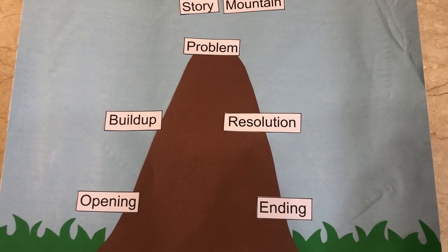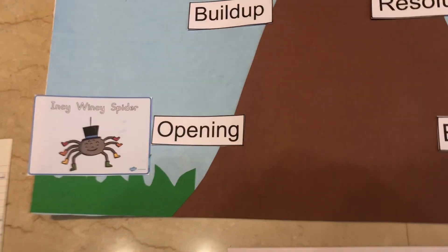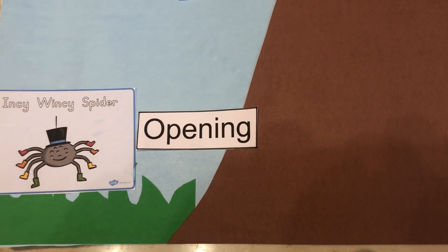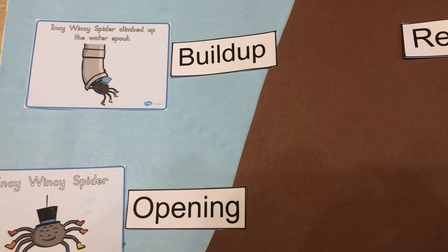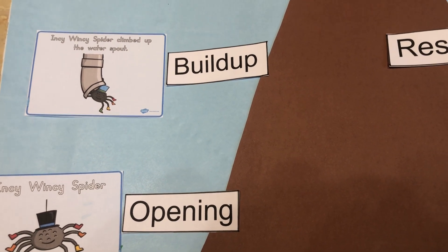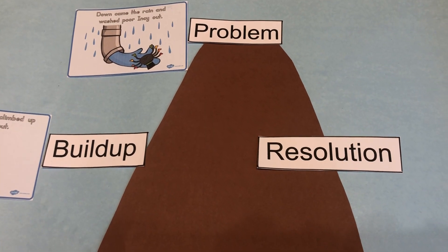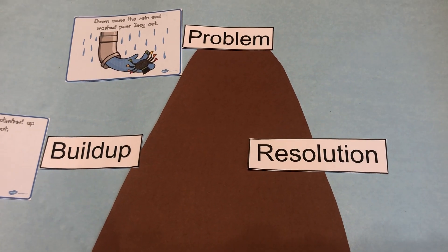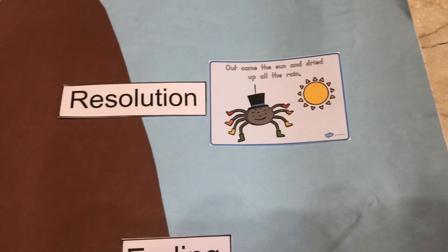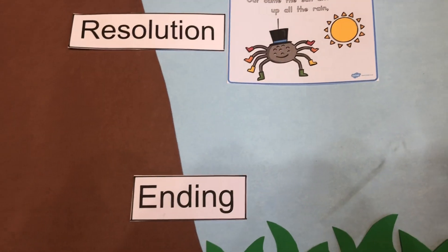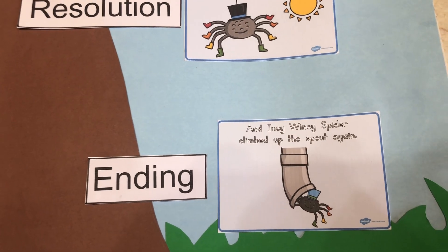Let us look at a simple example of the story mountain in action. Incy Wincy was a happy-go-lucky spider. Incy Wincy the spider climbed up the water spout; however, down came the rain and washed poor Wincy out. However, the sun came out and dried up all the rain, so Incy Wincy spider could climb up the spout again.